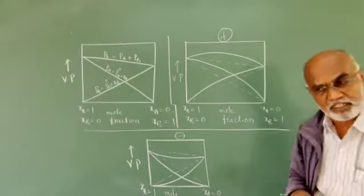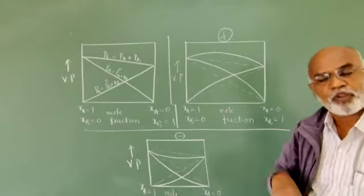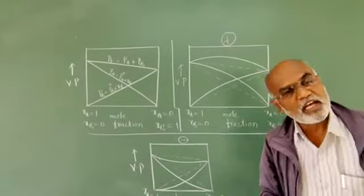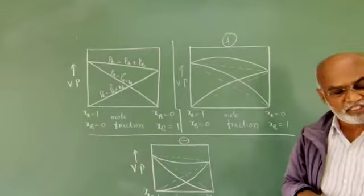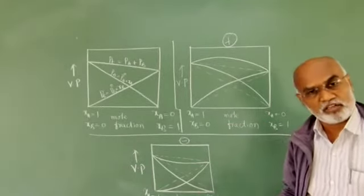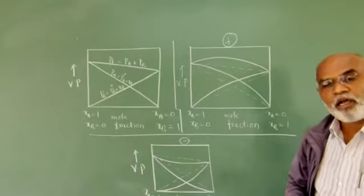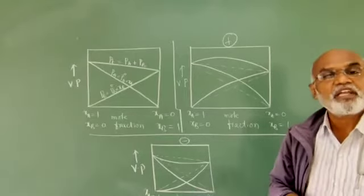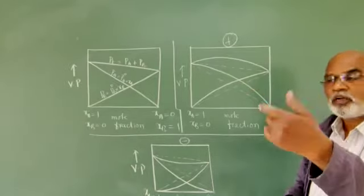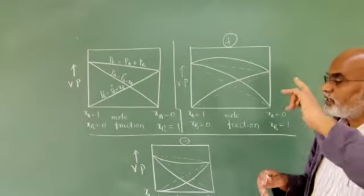A mixture of methyl alcohol and water is a non-ideal solution which shows positive deviation from Raoult's Law. Whereas a mixture of HCl and water is a binary liquid mixture which doesn't obey Raoult's Law but shows negative deviation. Negative deviation means the observed vapor pressure is less and the boiling point is more, whereas positive deviation means the observed vapor pressure is more and the boiling point is less.